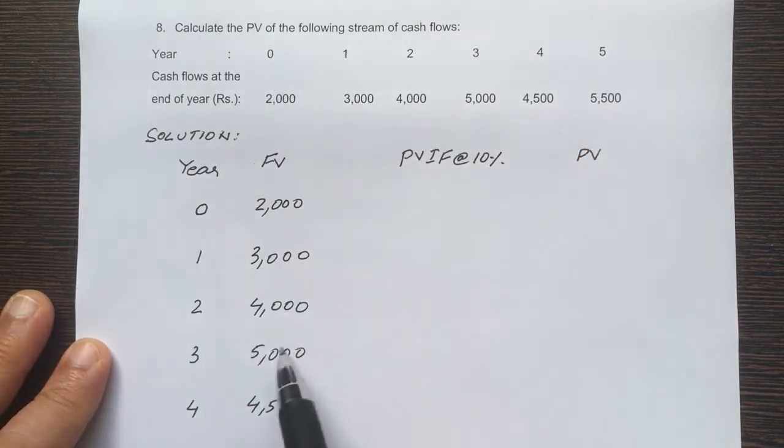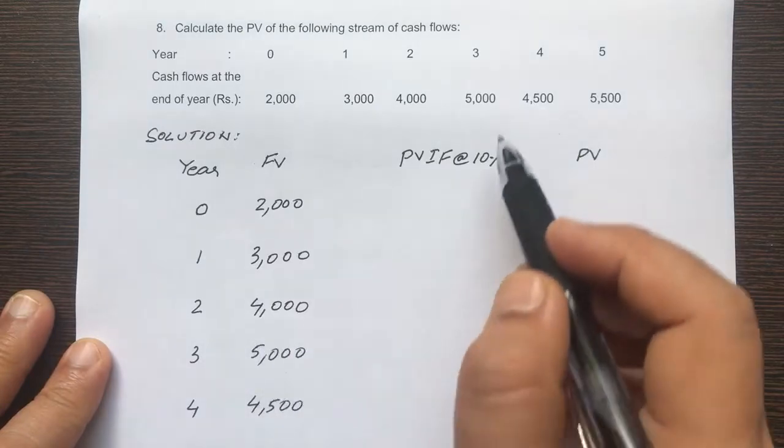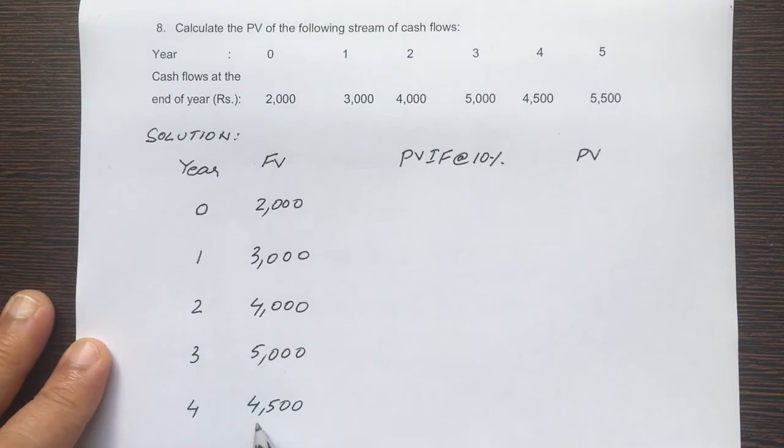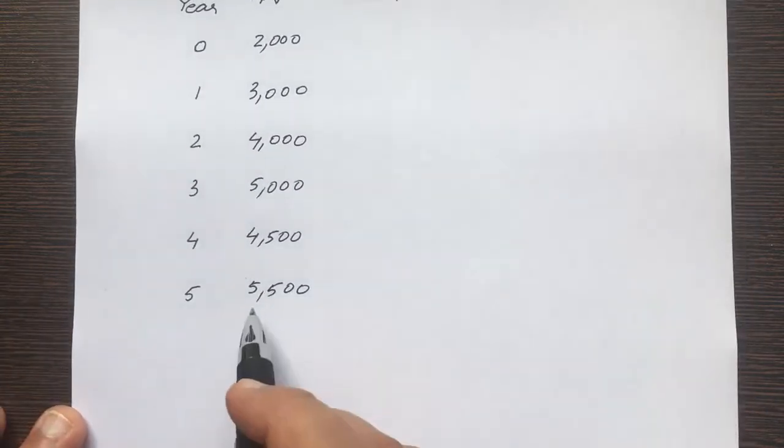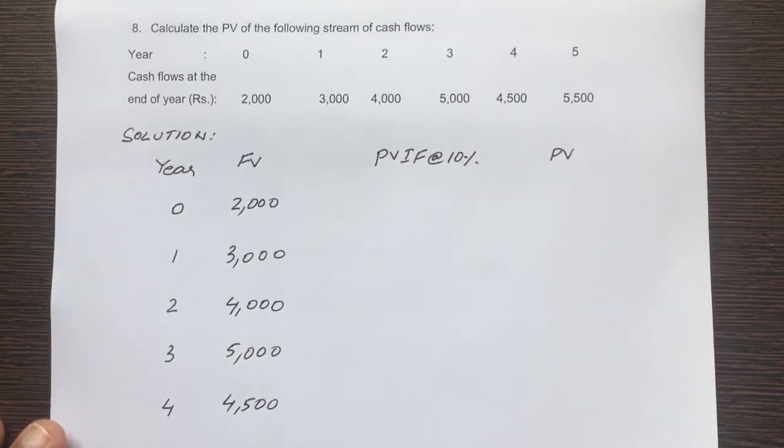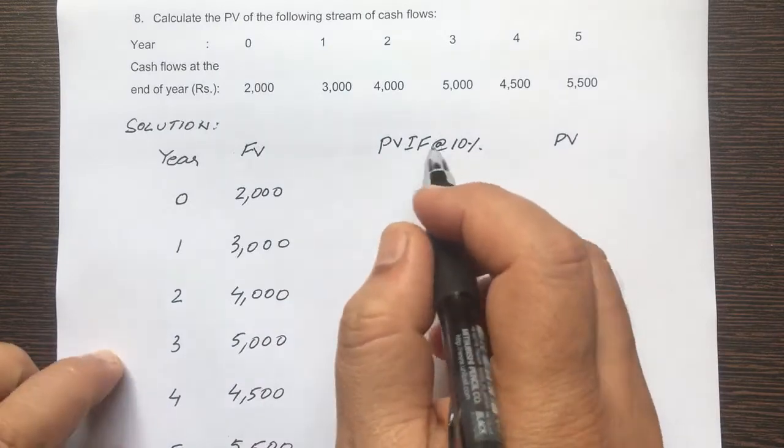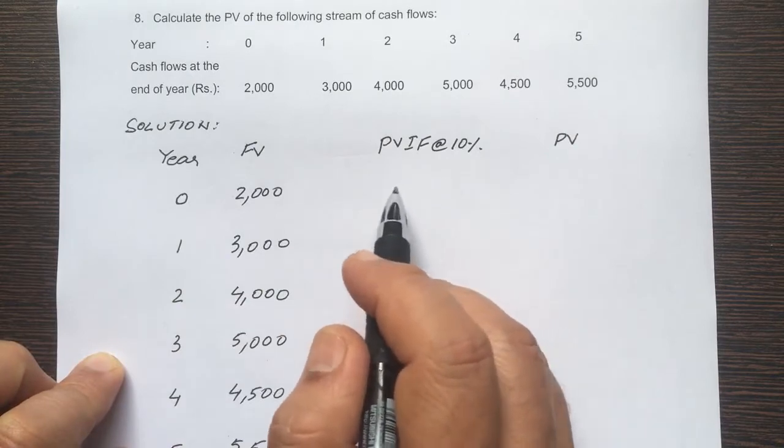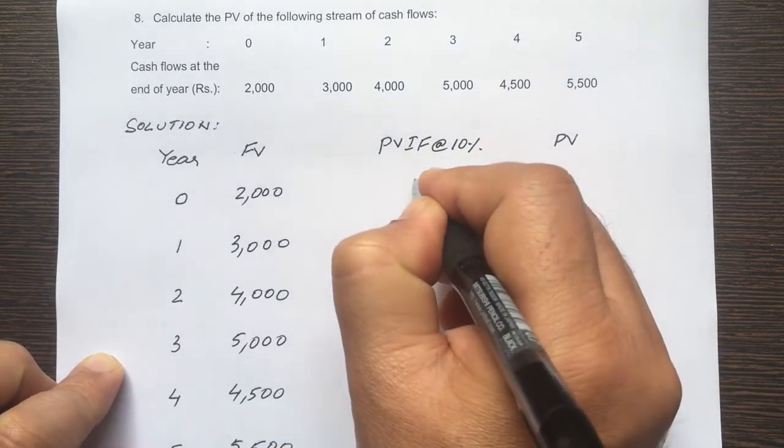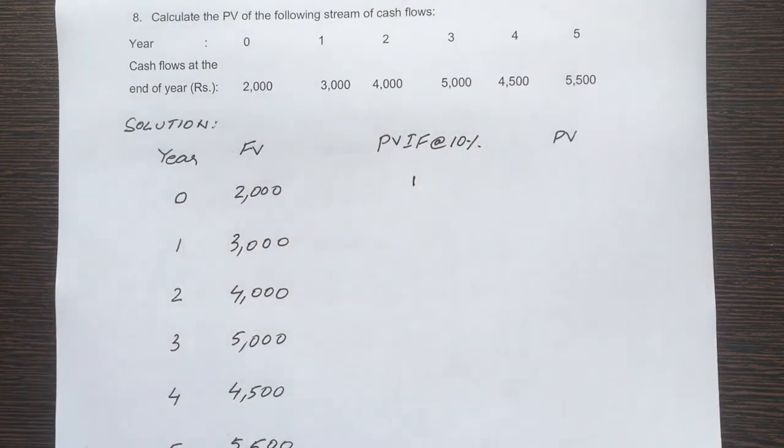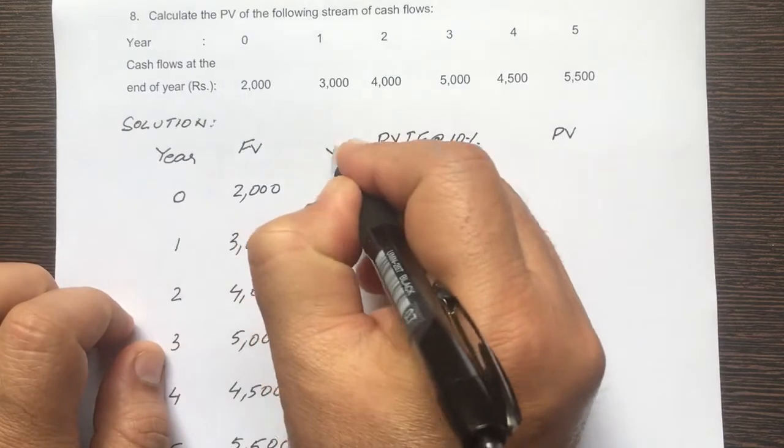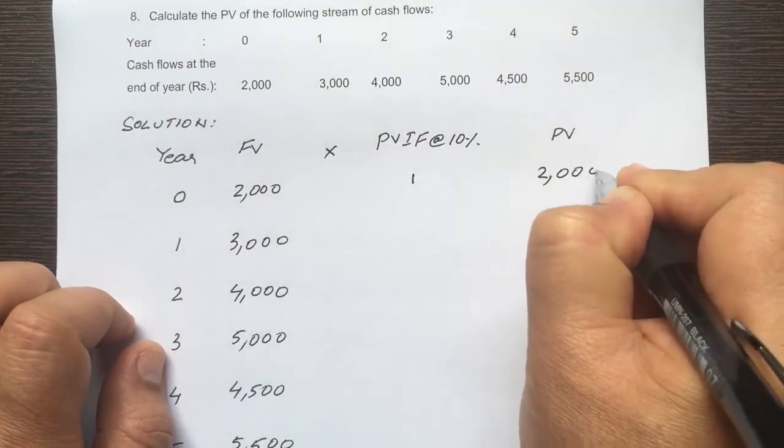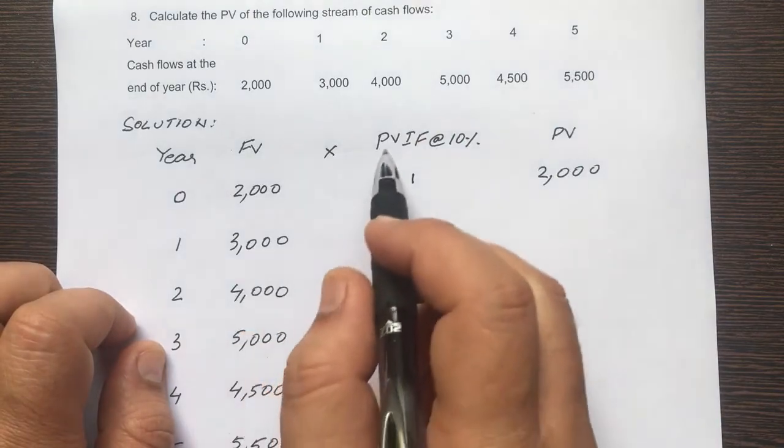4,000 occurs at the end of year 2, find out the present value of that. 5,000 occurs at the end of year 3, find out the present value. 4,500 occurs at the end of the fourth year, find out the present value, and also for 5,500 that occurs at the end of five years. Now always remember, the PVIF, present value interest factor, for any sum of money that occurs now, the PVIF is always equal to 1. So what is the value of 2,000 now? 2,000 times 1 equals 2,000, very simple.